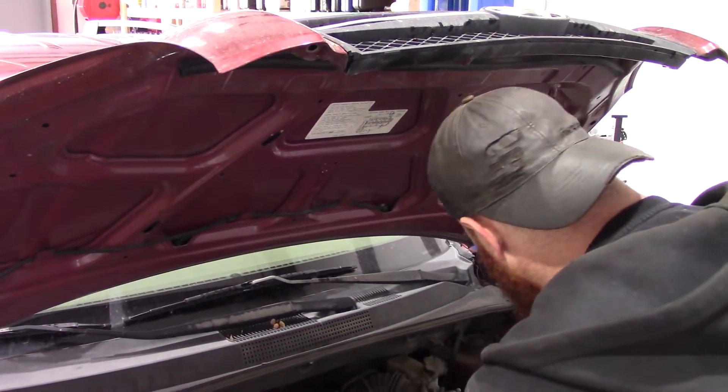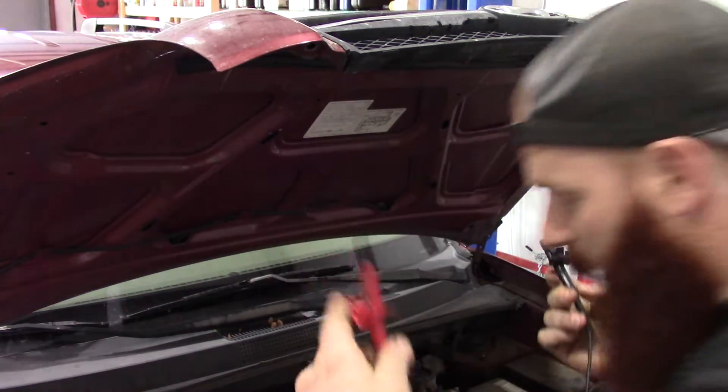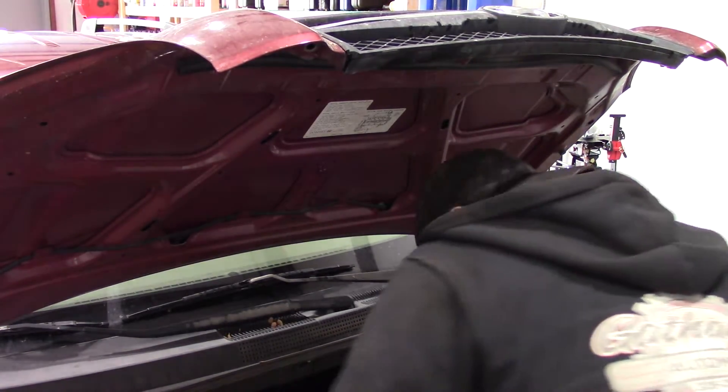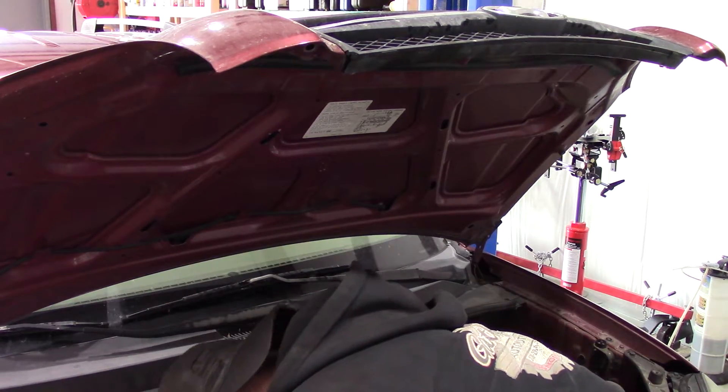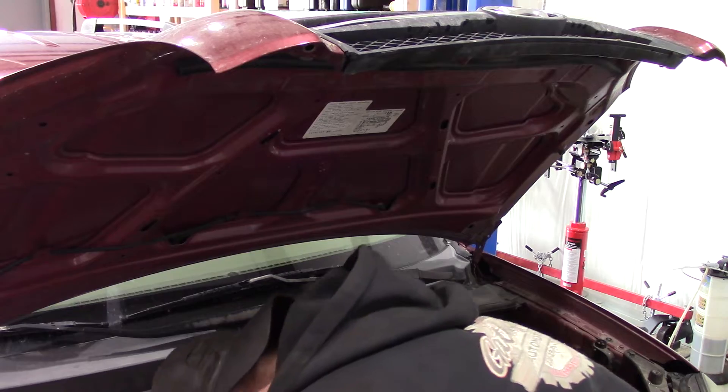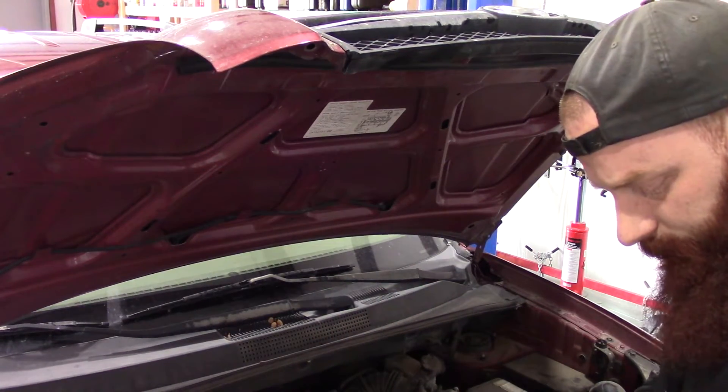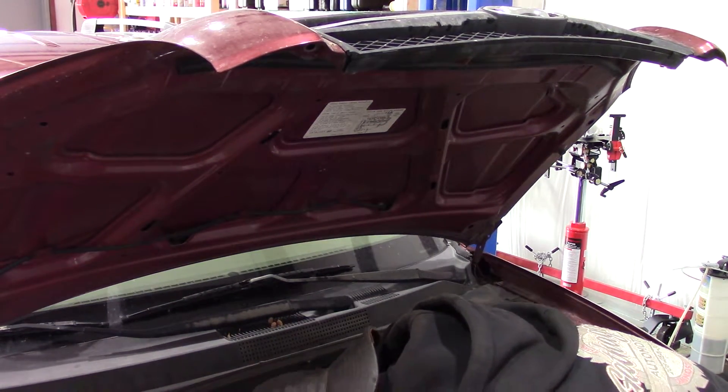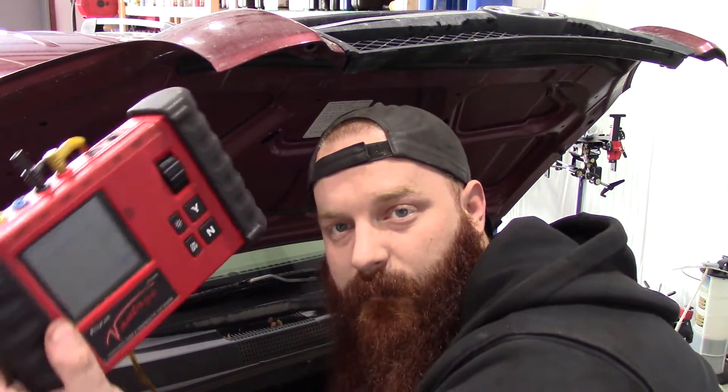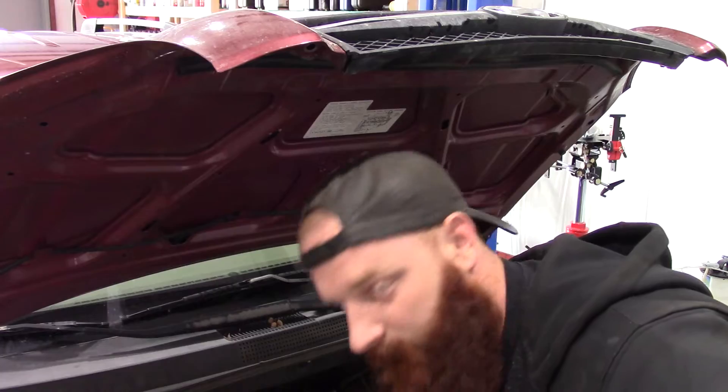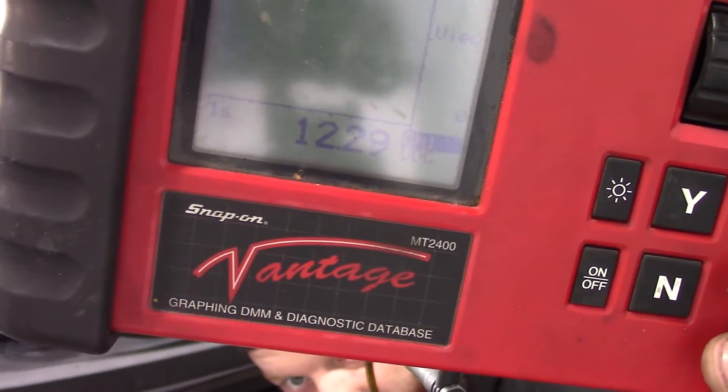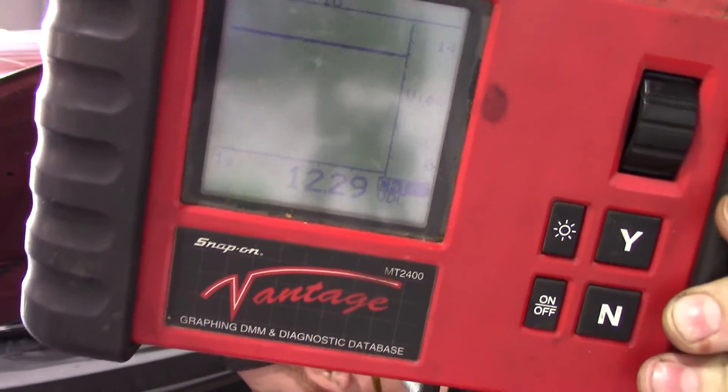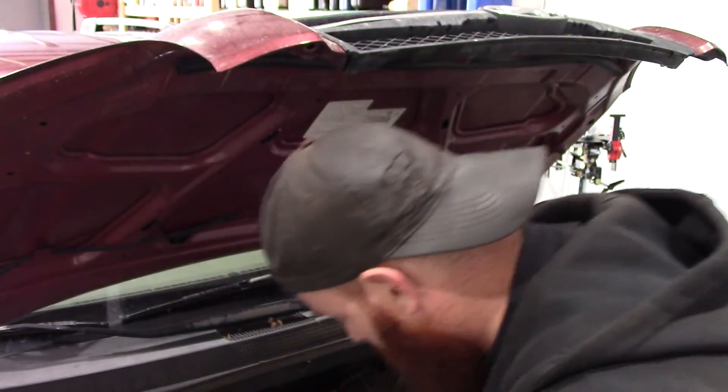Now we're going to move both leads to the alternator—positive to the positive post on the alternator, the negative to the case ground. As you can see, 12.29. We are straight on the alternator with negative and positive leads on the meter. It's dropping obviously because the alternator is not charging, so the battery voltage is dropping.